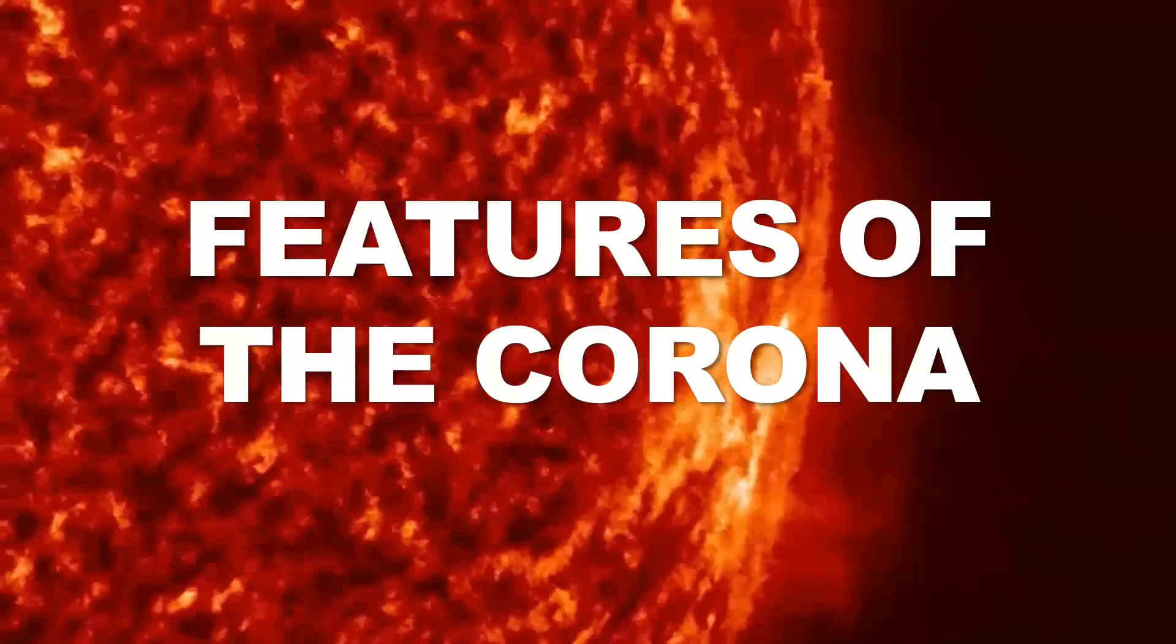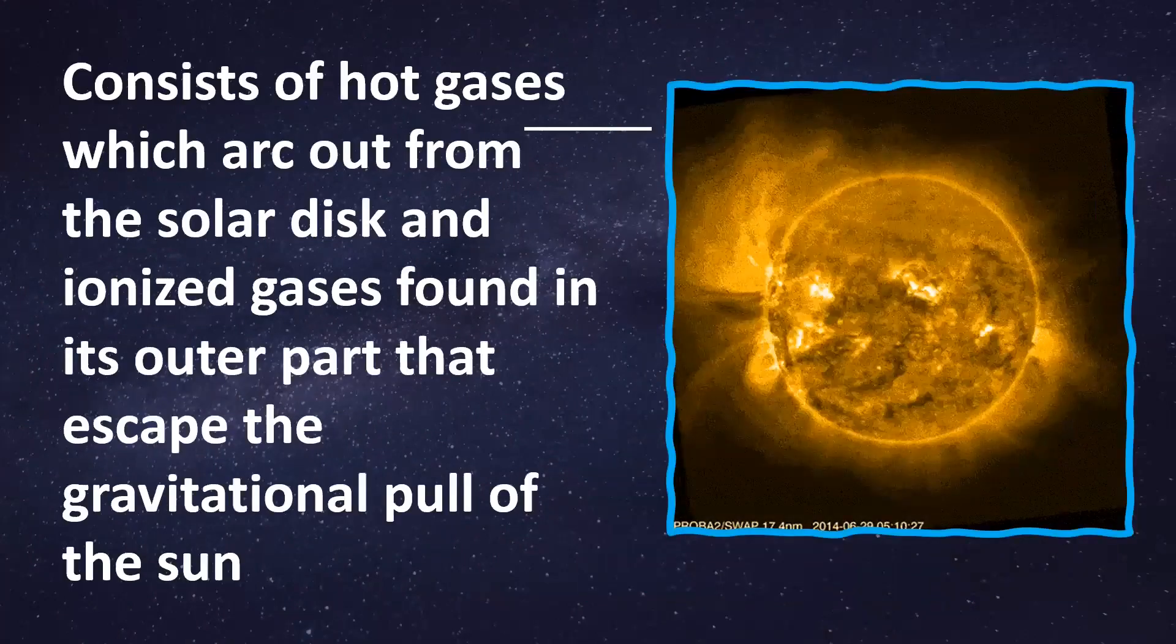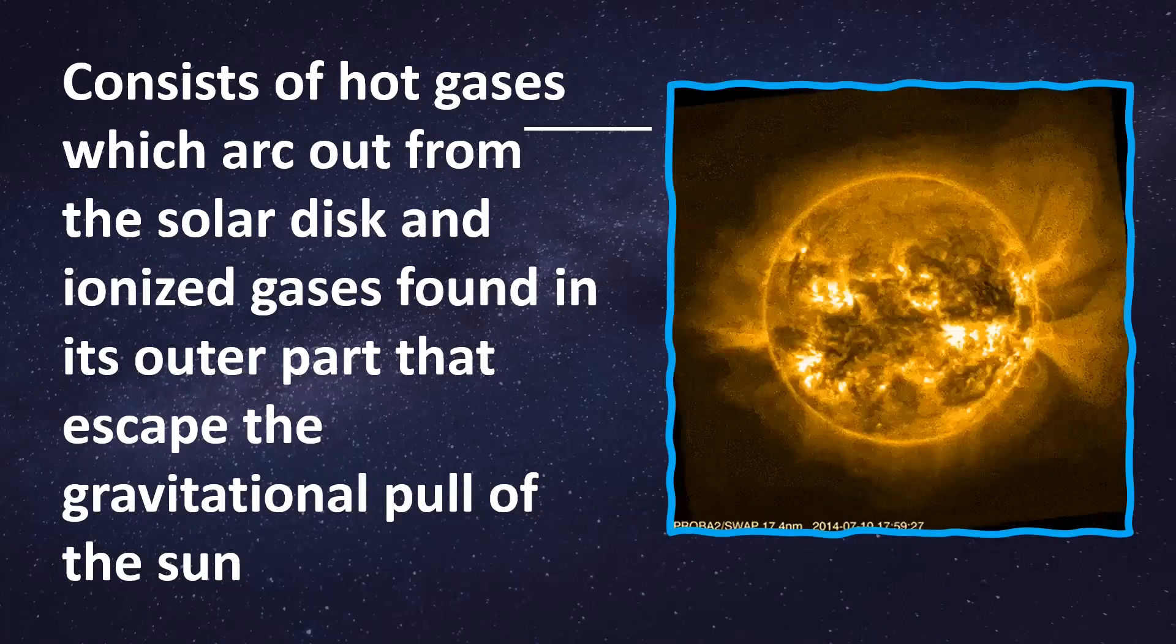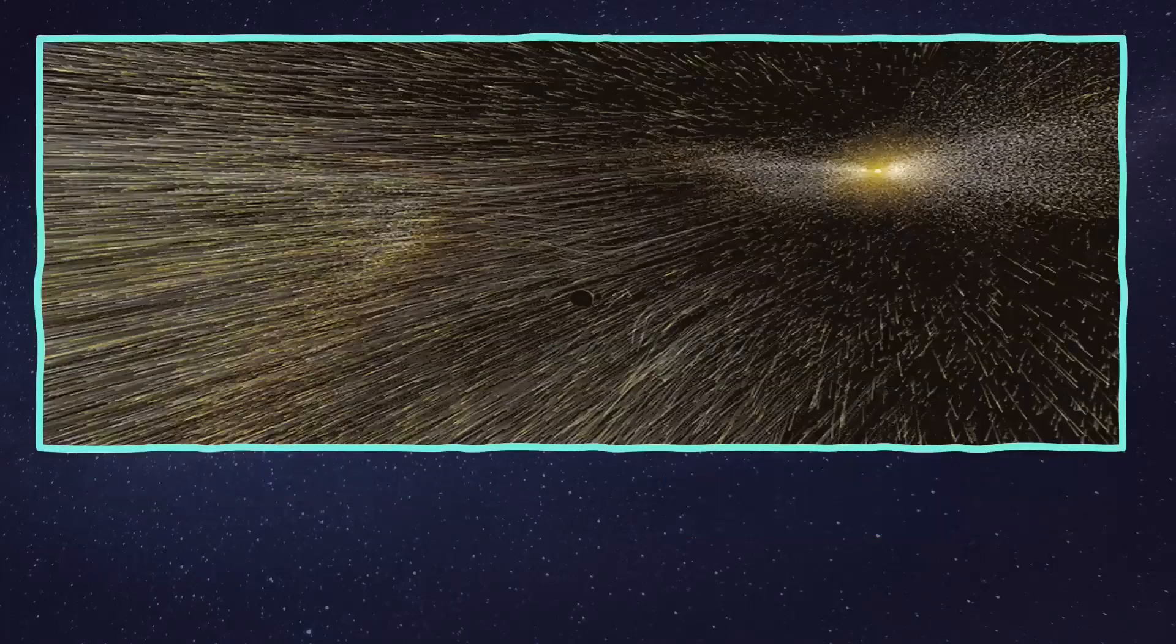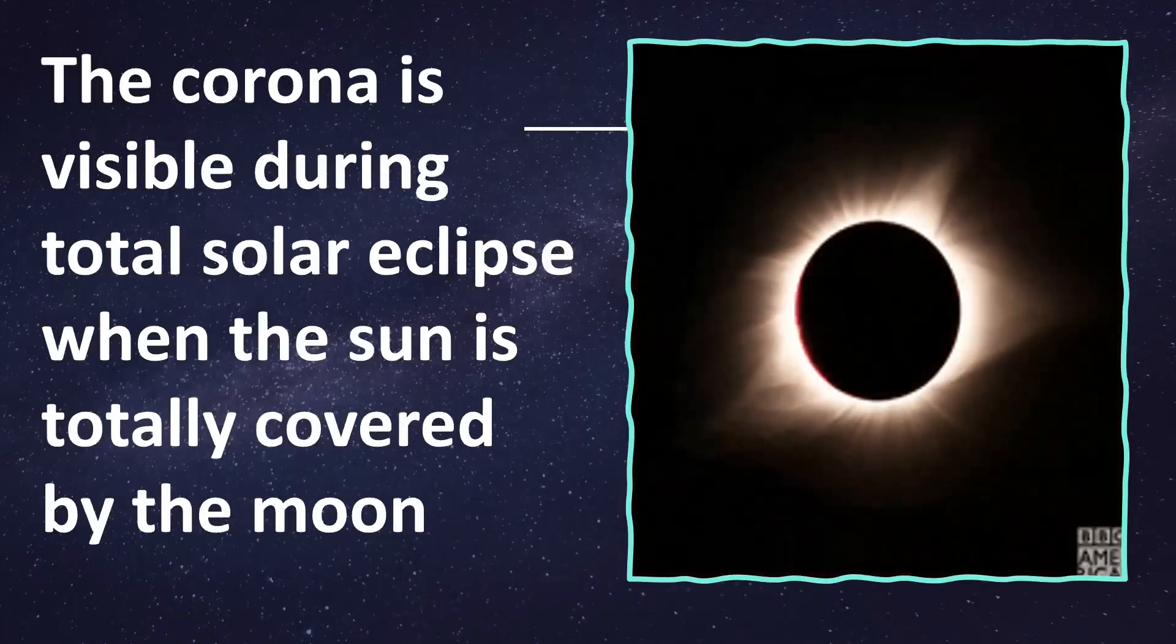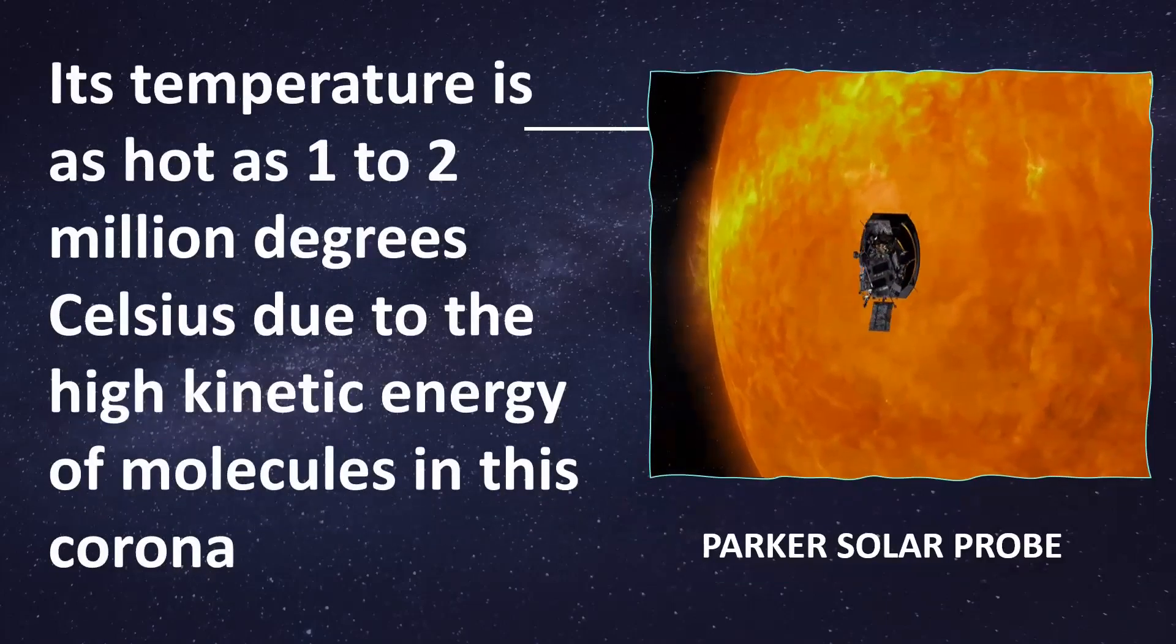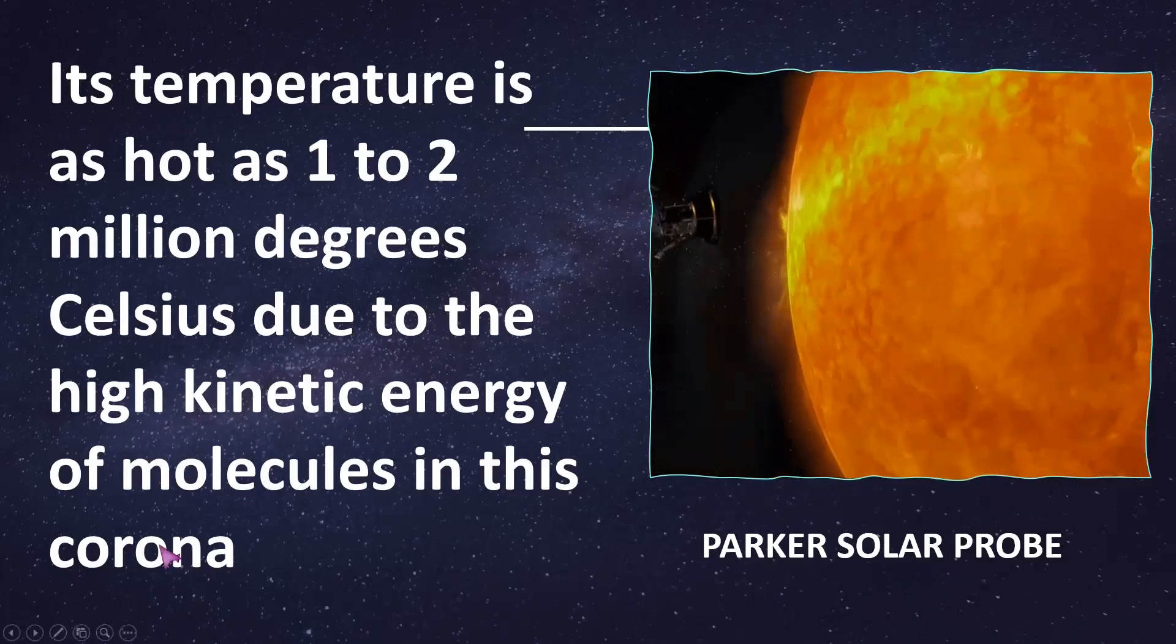Last, we have the corona. This is the outermost layer of the solar atmosphere. It consists of hot gases which arc out from the solar disk and ionized gases found in its outer part that escape the gravitational pull of the sun. These escaped ionized gases are associated with the solar wind. The corona is visible during total solar eclipse when the sun is totally covered by the moon. Its temperature is as hot as 1 to 2 million degrees due to the high kinetic energy of molecules. This was captured by the Parker Solar Probe.